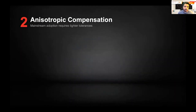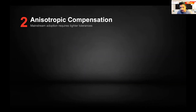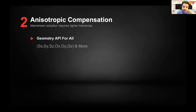The next key thing we'd like to talk about is anisotropic compensation. It's clear that for mainstream adoption we need tighter tolerances, and this needs to happen much faster. We can't spend 10 to 15 hours compensating something just so we can print it and hope that the green part that comes out will come out the right way.